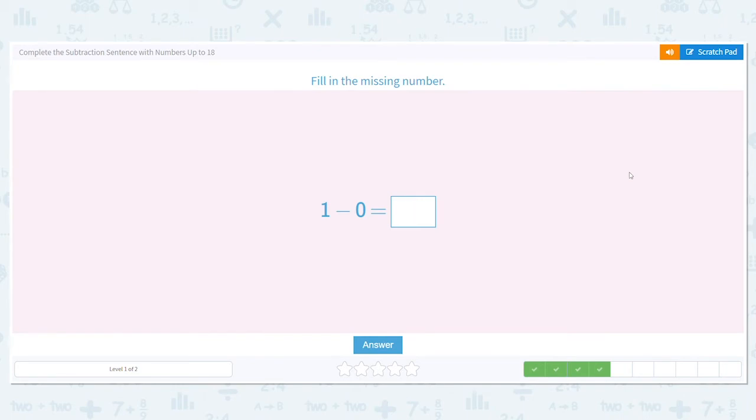Next 1 minus 0 equals what? Any number minus 0 equals that original number. So 1 minus 0 equals 1.